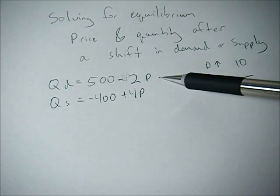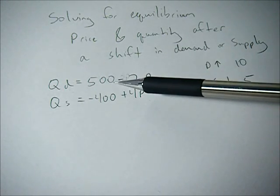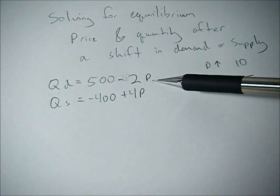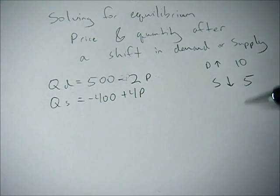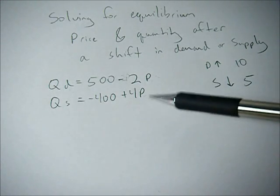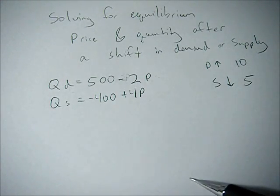Quantity demanded as a function of price. Here, quantity demanded is 500 units minus 2 times the value of P, giving us a downward sloping demand curve. Our supply function is negative 400 plus 4P, giving us the upward sloping supply curve.